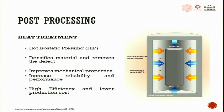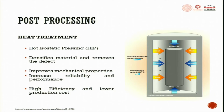Heat treatment - one common process is hot isostatic pressing (HIP). In HIP, you apply both pressure and temperature. Isostatic pressure up to 2000 bar is used, and the temperature also goes up to 2000 degrees Celsius. The component is compressed, and there is a possibility that cracks and pores can be closed - but it is a very expensive process. Cold isostatic pressing is also possible. This densifies the material, removes defects, improves mechanical properties, and increases reliability and performance.